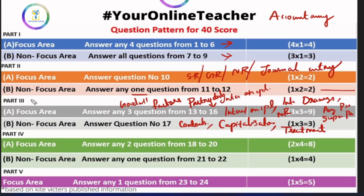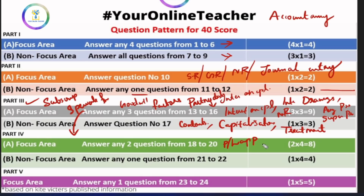In part 3, there is no subscription, adjustments, and special funds. Here we will talk about 3 marks or 4 marks questions — Interest on Drawings, Interest on Capital, etc. There is a chance to get a profit and loss appropriation account and a partner's capital account.